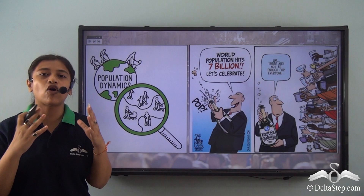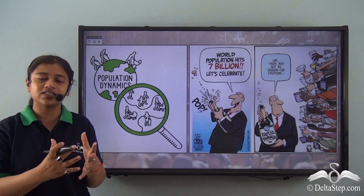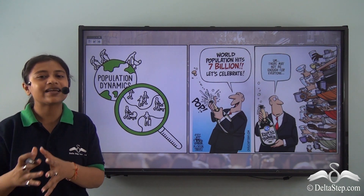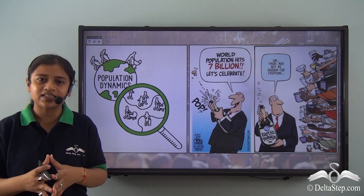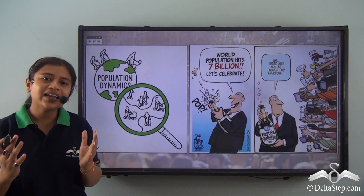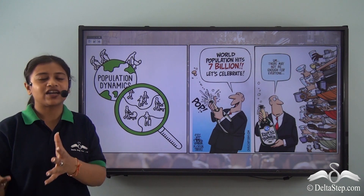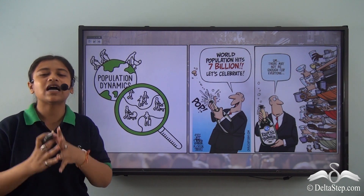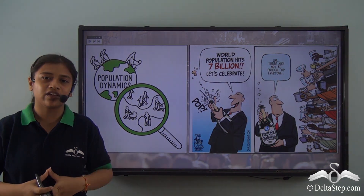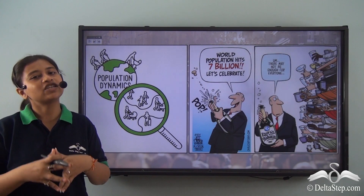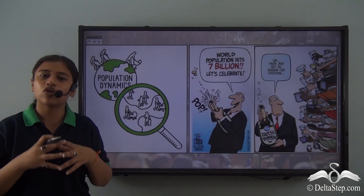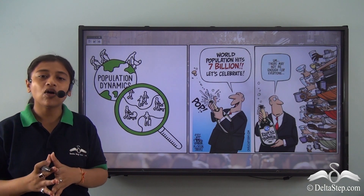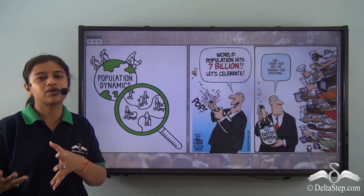The government should formulate and design its policies so that it can cater to the gender disparities that exist in society, and it should plan its course of action according to the needs of the population it is working for. We have understood the meaning of population dynamics — it is the study of the change in population.